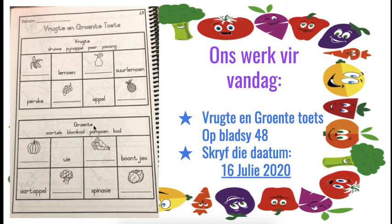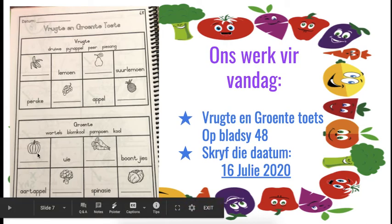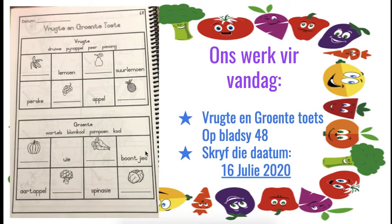Then you go to groente. You've got wortels, blomkool, pampoene, and kool — there are pictures there that you're going to fill in. And then you're going to draw: aartappels, eier, spinasie, boontjies. So nice and easy peasy for me! Colour in your pictures and send us a photo of the work when you're done, or show your teacher in your class. Have a super super weekend, grade twos, and I'll see you next week for some more Afrikaans lessons.